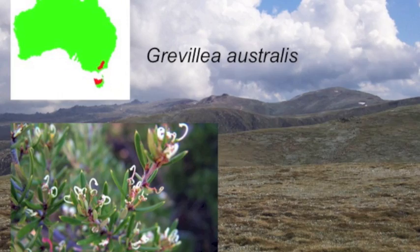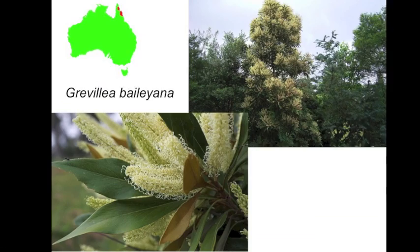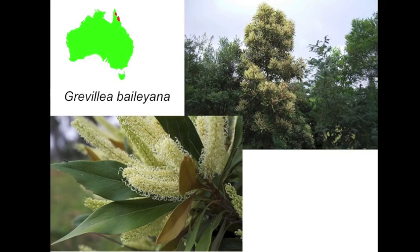Traditionally, botanists have grouped species together by how they're related in their phylogeny, grouping related genera together into families and different families into orders. But in many instances, some species within a genera are functionally very different in that they play very different roles in their respective communities. For example, Grevillea australis within the family Proteaceae is a short, shrubby plant that grows in the Alpine regions of South-Eastern Australia, whereas Grevillea baileana is a tree that can grow to 30 metres and is found in the tropical rainforests of North-East Queensland and Papua New Guinea. So in a functional sense, these two species are very different as they use resources differently and have different environmental requirements, although they're very closely related.